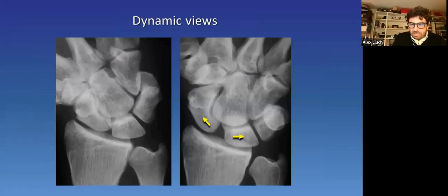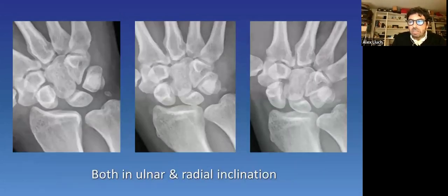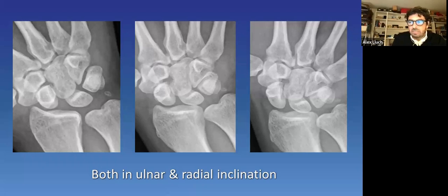If standard plane X-rays are normal, one can use dynamic views. Although I don't know if dynamic is the correct term to call them. They are truly static views in different wrist positions, trying to induce malalignment. It is said that in ulnar inclination, the scaphoid and lunate will separate and a gap is created. Again, the gap tyranny, as Mark always says. But many times, the difference between the scaphoid and the lunate is seen in radial inclination, where the scaphoid is abnormally overflexed. So both radial and ulnar inclinations have to be checked.